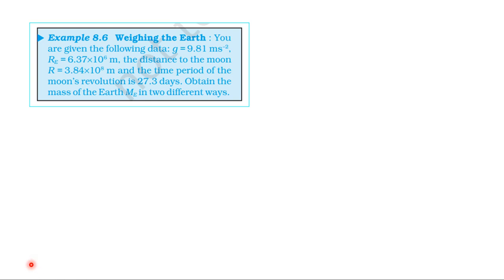First method: using the acceleration due to gravity formula, equation 8.12. The mass of the earth is equal to g times the radius of the earth squared divided by capital G.